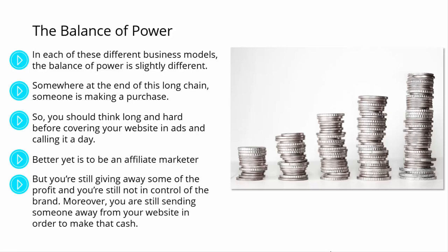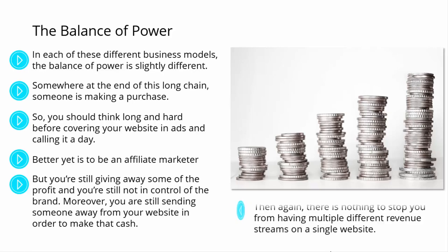And this is why it's better yet to have your own product whenever possible. If you're a business that sells an actual physical product or a useful service, then you will be in the strongest position possible. Then again, there's nothing to stop you from having multiple different revenue streams on a single website. You can run a blog that makes money from AdSense, also has a paid banner at the top of the page, also recommends affiliate products in the body of the blog posts, also sells an e-book, and why not offer a consulting program on top of that? Either way, this is what makes the web go round.